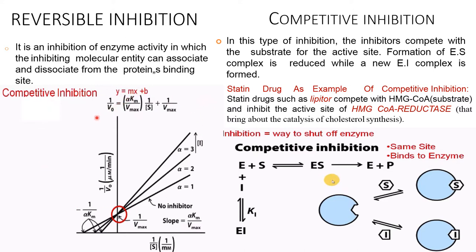The reciprocal plot for competitive inhibition is based on the Lineweaver-Burk (Michaelis-Menten reciprocal) form, where the formula is: 1/V₀ = (α·Km/Vmax)·(1/[S]) + 1/Vmax. The y-intercept remains the same as in the uninhibited plot, and this formula should be remembered for competitive inhibition.